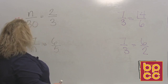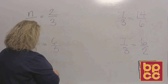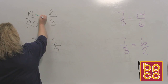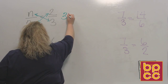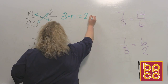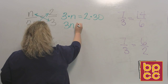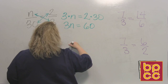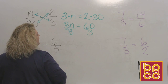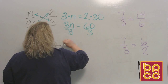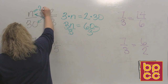All right, so I have a basic proportion right here. I have N divided by 30 is equal to 2 divided by 3. To do the answer to this, we want to do cross products — multiply in the shape of an X. So we do 3 times N is equal to 2 times 30. 3 times N is 3N, and 2 times 30 would be 60. Then we divide to get the letter by itself, and N is equal to 20.